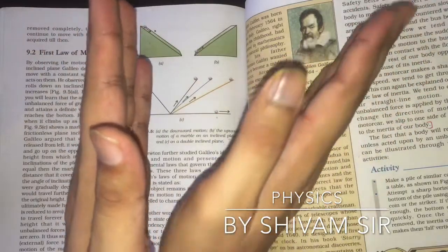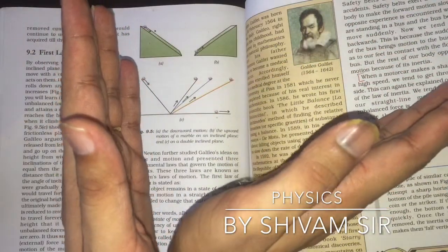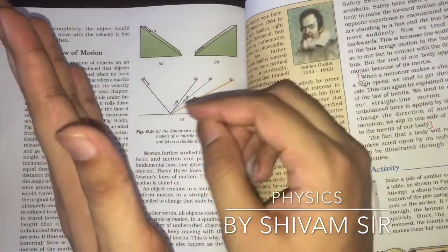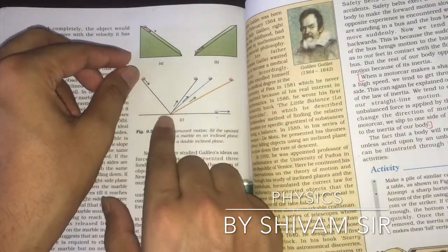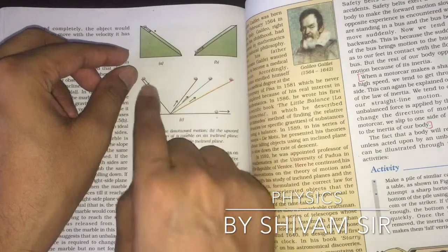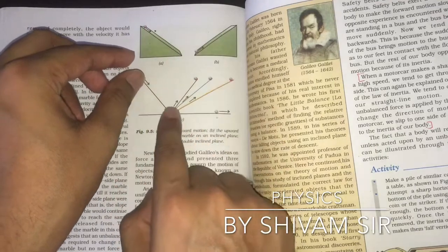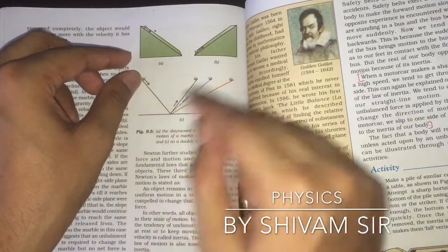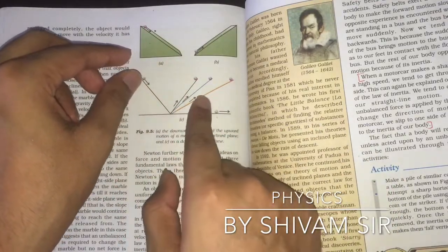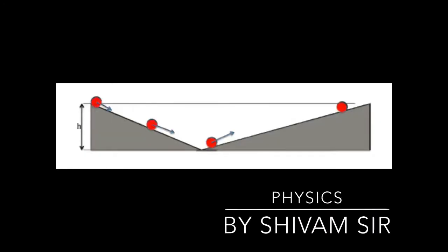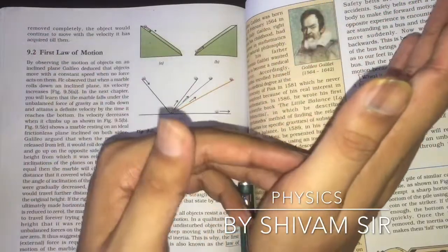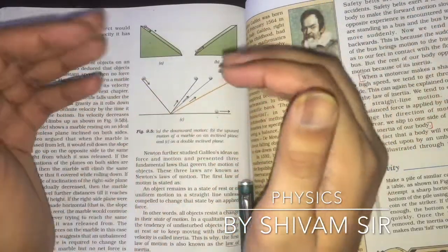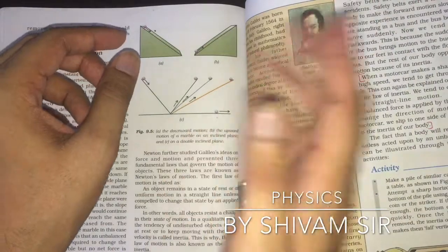In the third case, he reduced the angle of inclination on the right side. When the marble is released, it tends to move to the same height on the right-hand side — the marble tries to reach the same height on the right-hand plane.